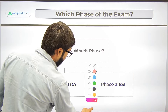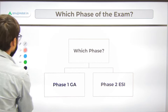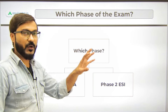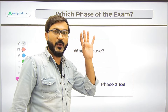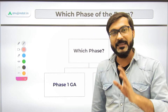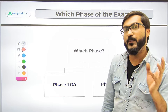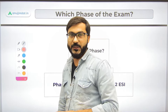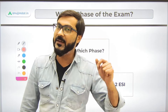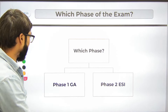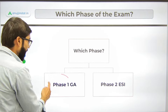First of all, let me be very clear: indices and reports are important for both phases of the examination — Phase 1 and Phase 2. In Phase 1, they are important for the General Awareness section.